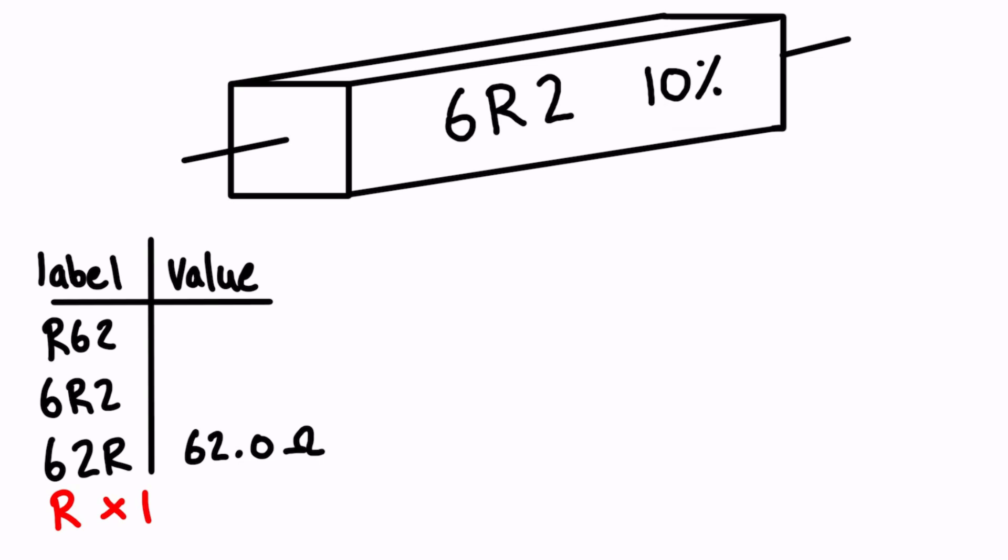When we look at the next one up, the R is the decimal place. It's between the 6 and the 2. I don't know who came up with this stuff, but it means 6.2 times 1 for the R, so it's just 6.2 ohms. And if we had R62, that would mean that we would have 0.62 because the R is the position of the decimal place. It's basically 0.62, and it's a multiplier of 1, so it's just ohms.